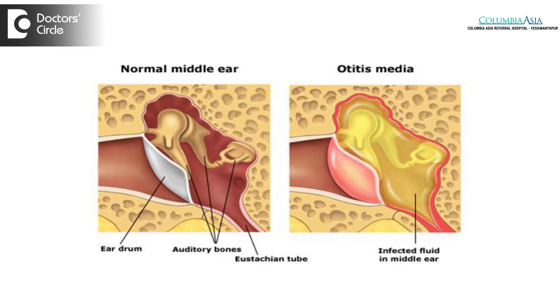This can lead to what is called otitis media. Otitis media can be of two types: there can be only fluid accumulation, when it is called otitis media with effusion, and sometimes it can be associated with pus accumulation, when it is called acute otitis media.